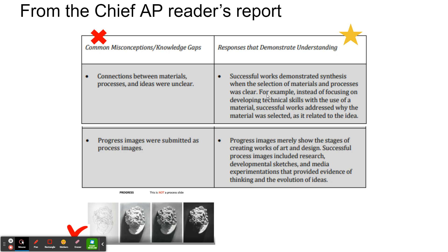Everywhere in your writing and the 100 characters on your process pages, you should always address the why. Why did you use this color? Why did you edit it this way? Why did you use this focal length? Why did you shoot at this angle? All of those things you should be doing on purpose in order to get an idea across.